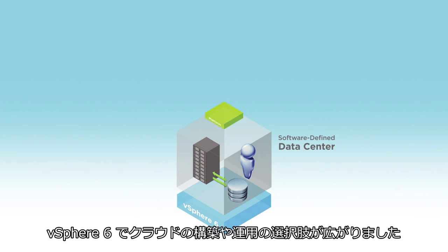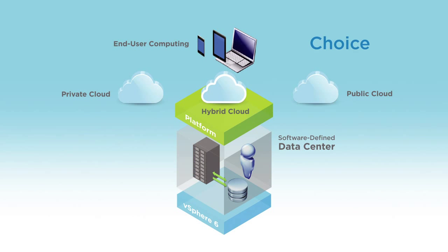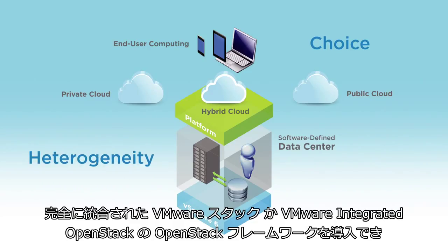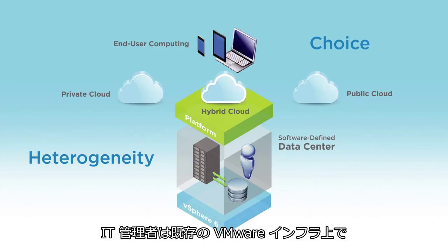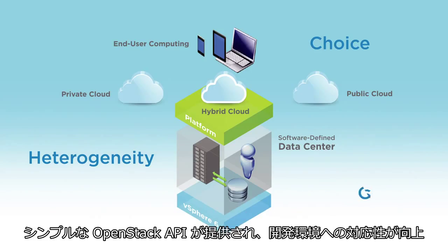vSphere 6 gives you freedom of choice for building and operating your cloud environment. Deploy a fully integrated VMware stack or an OpenStack framework with VMware Integrated OpenStack, which enables IT administrators to easily and rapidly deploy and manage a production-grade OpenStack-based deployment on top of their existing VMware infrastructure, while providing developers with simple, vendor-neutral OpenStack APIs, thereby accelerating developer innovation.